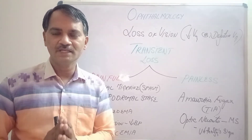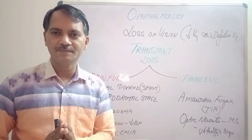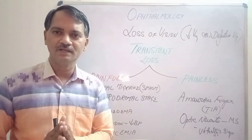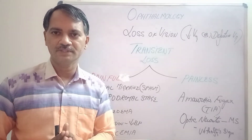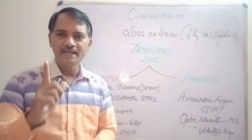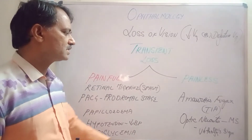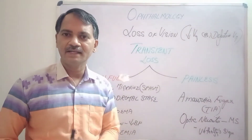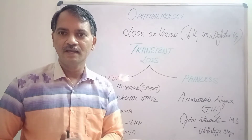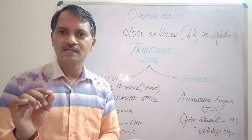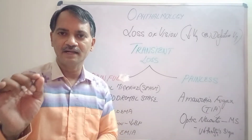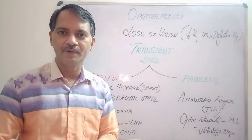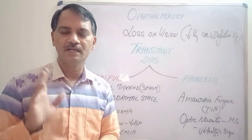Transient Loss of Vision is also of two types: Painless Transient Loss of Vision and Painful Transient Loss of Vision. Painless Transient Loss of Vision includes Amaurosis Fugax, which is nothing but a transient ischemic attack. An embolus comes and occludes the central retinal artery or the main artery supplying the occipital cortex.